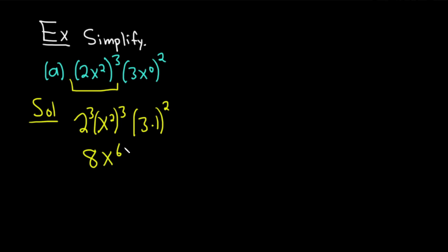So 2 cubed is 8, and then here are properties of exponents. You basically multiply 3 times 2 is 6, you get x to the 6th. 3 times 1 is 3, and 3 squared is 9, so you just get 9. And 9 times 8 is 72, x to the 6th.